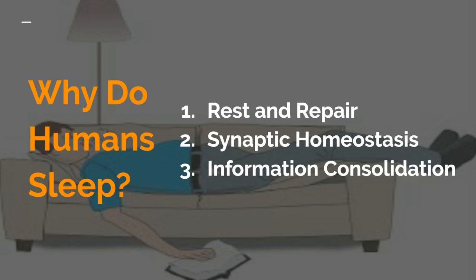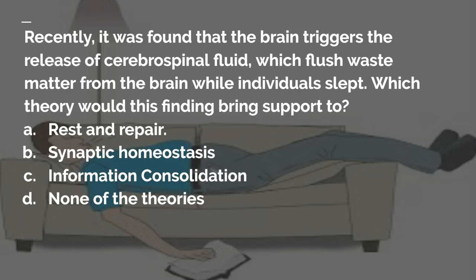From this case study we can pose interesting questions like this one: it was recently found that the brain triggers the release of cerebral spinal fluid, which flushes waste matter from the brain while individuals slept. So which theory would this new evidence bring support to? A, rest and repair; B, synaptic homeostasis; C, information consolidation; or D, none of the theories. The answer is B, synaptic homeostasis — the idea that our brain flushes non-essential connections is supported by the idea of cerebral spinal fluid being present and flushing matter away.